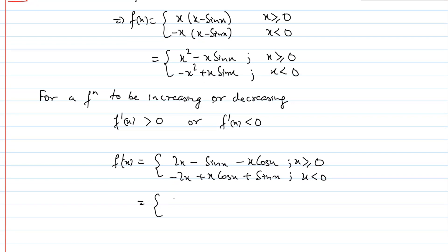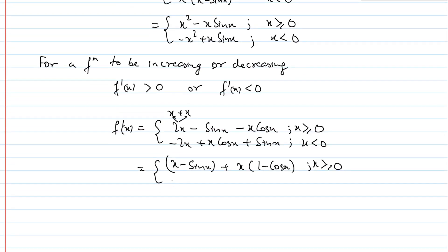इस x को साफ लिख सकते हैं: x − sin(x) plus — 2x को x + x लिख दिया, तो (x − sin(x)) + x(1 − cos(x)) for x ≥ 0। और same काम करते हैं: x common निकालें — (cos(x) − 1), और −2x को −x − x लिख दें, तो x(cos(x) − 1) + (sin(x) − x) for x < 0।